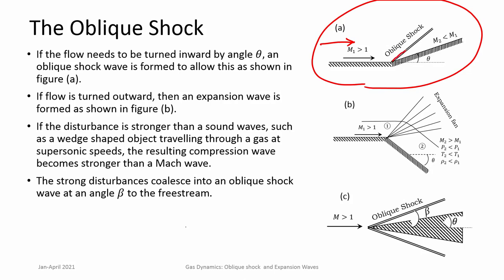The oblique shock is at an angle to the upstream flow, and after the oblique shock the flow gets turned towards itself and parallel to the wall. It is a shock wave — a compression wave — so pressure, temperature, and density increase while Mach number decreases across the oblique shock.